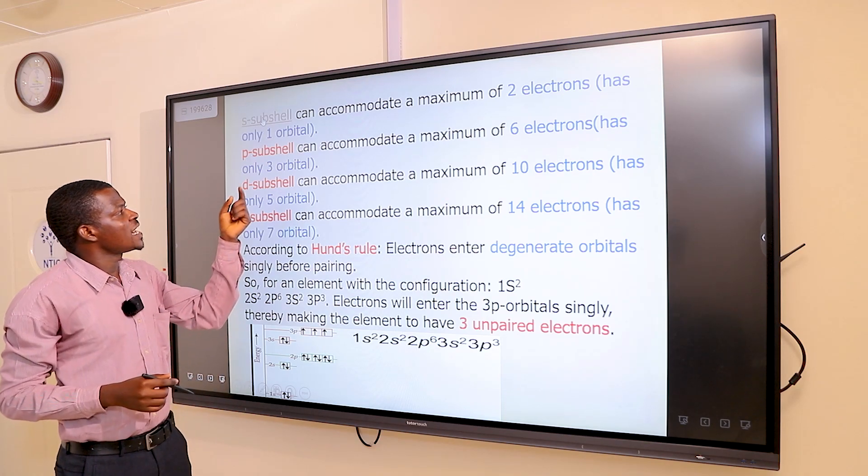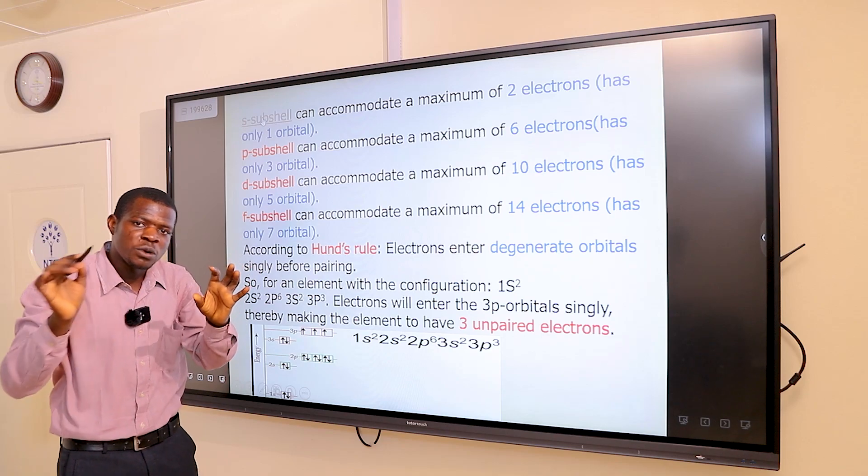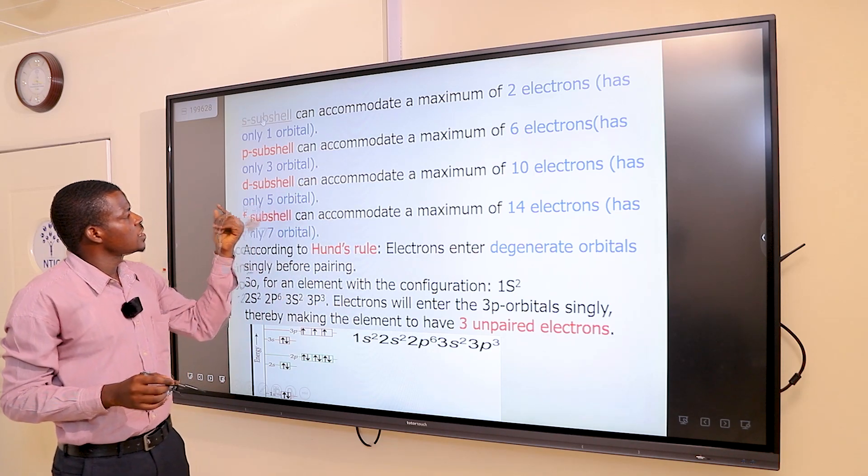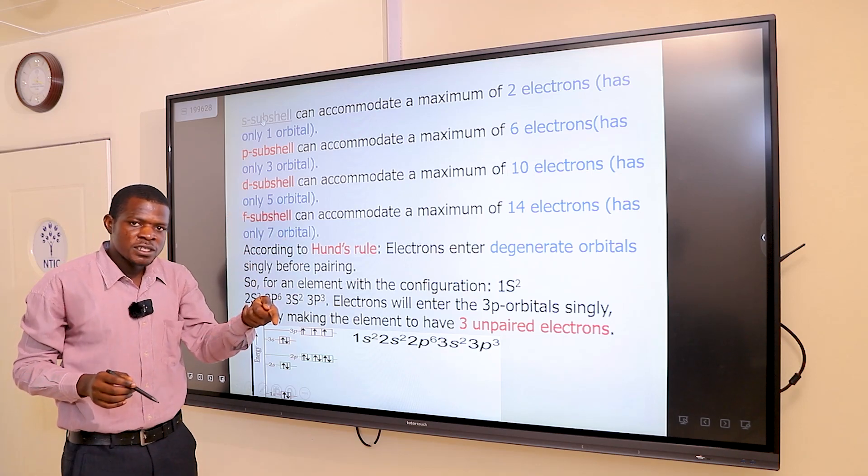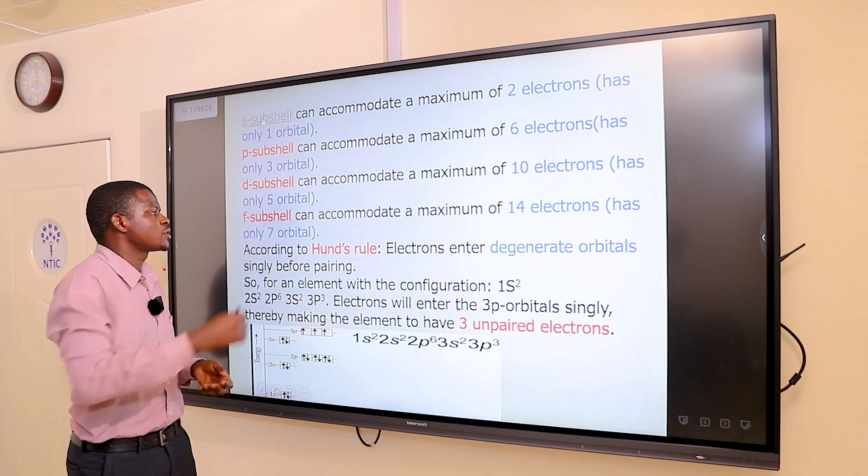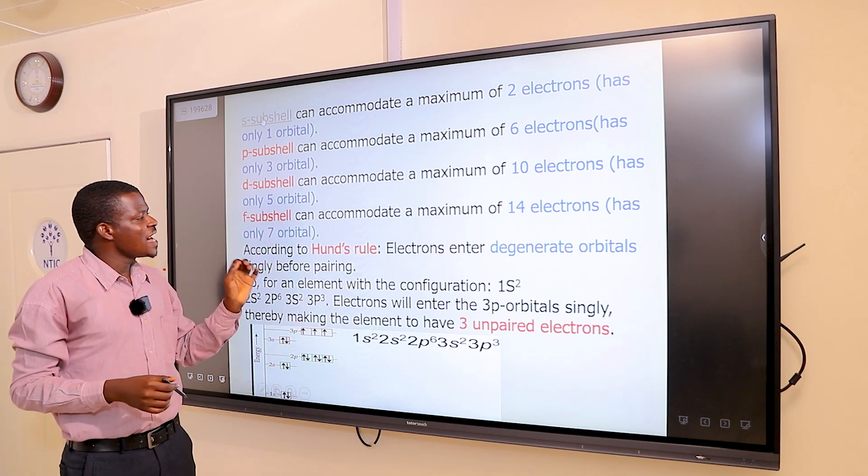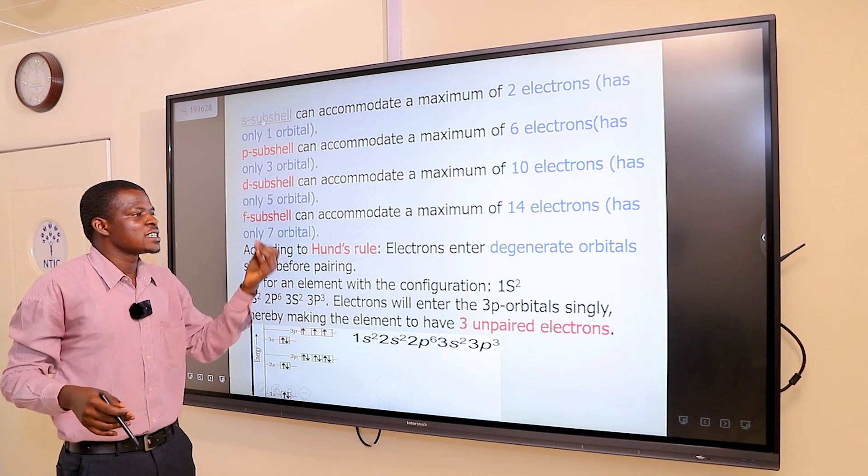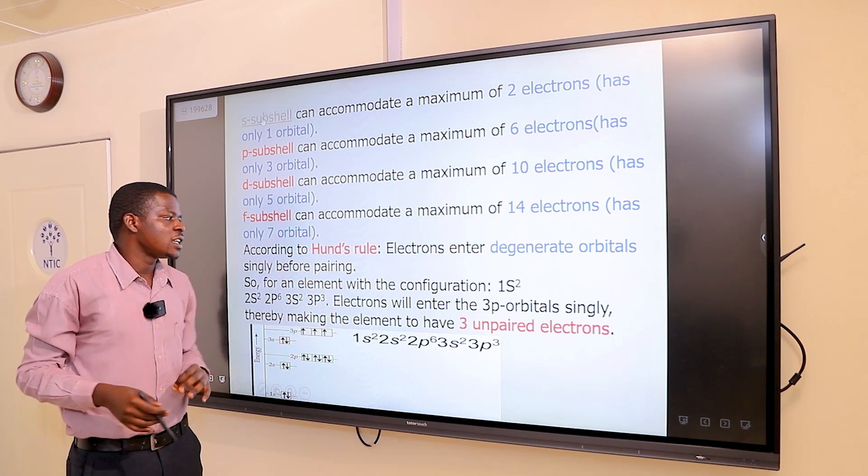We can conclude that the S subshell can accommodate a maximum of two electrons. The P subshell has three orbitals, so it can take a maximum of six electrons. The D subshell has five orbitals, meaning it can accommodate a maximum of 10 electrons. The F subshell has seven orbitals, therefore it can take a maximum of 14 electrons.